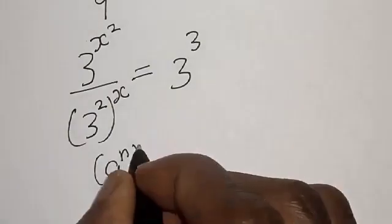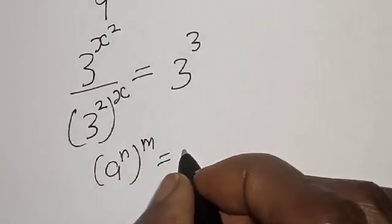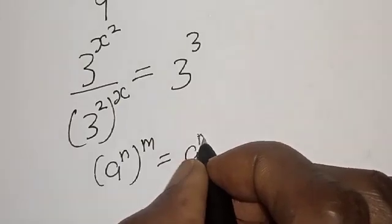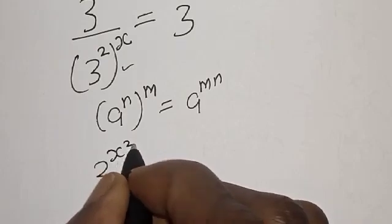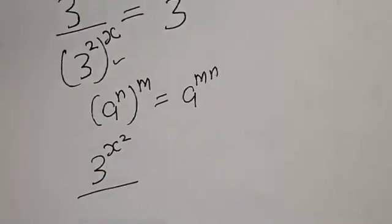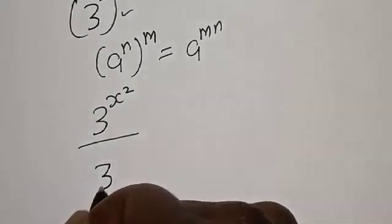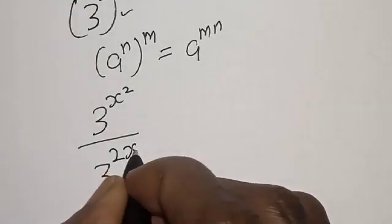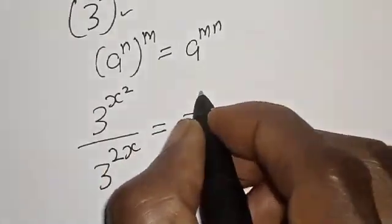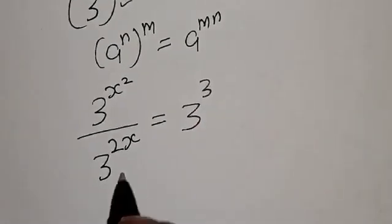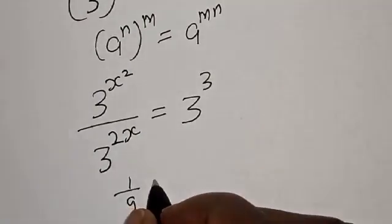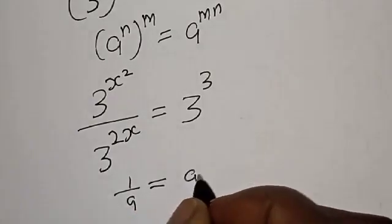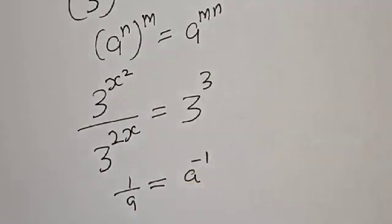Note that if you have a raised to power n, raised to power m, this is the same thing as a raised to power m times n. So we get 3 raised to power s squared divided by 3 raised to power 2s, which equals 3 raised to power 3. Also note that 1 over a equals a raised to power minus 1.